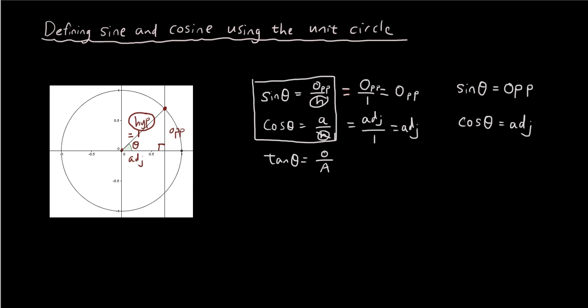Since we have tan θ here, we might as well touch on it briefly. Since sin θ is equal to the opposite and adjacent is cos θ, the new definition for tangent is tan θ equals sin θ over cos θ.